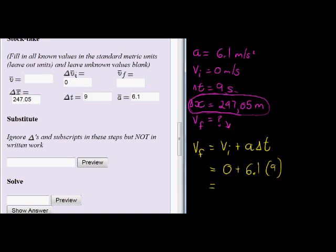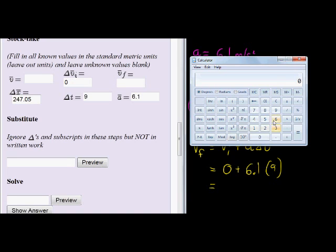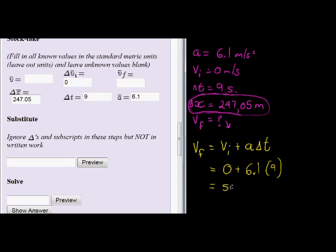Using my calculator, I see that 0 plus 6.1 times 9 equals 54.9. 54.9 meters per second. That's what it's traveling at.